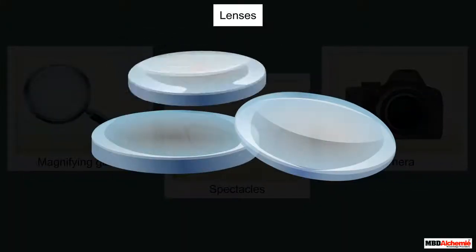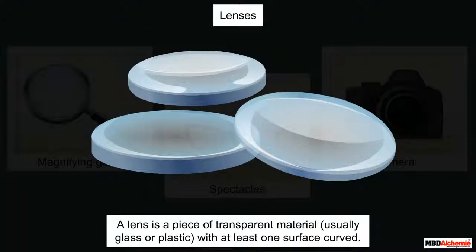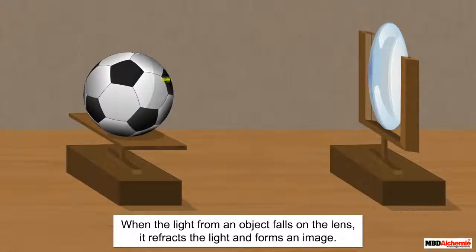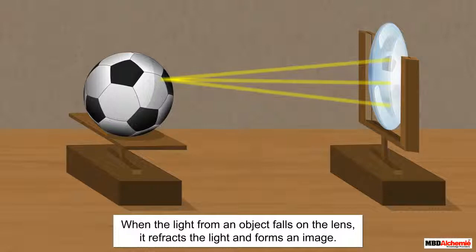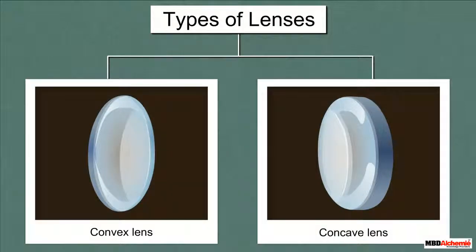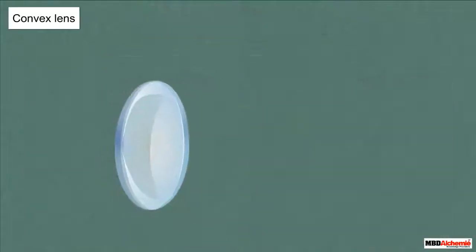It is the lens. A lens is a piece of transparent material, usually glass or plastic, with at least one surface curved. When the light from an object falls on the lens, it refracts the light and forms an image. Lenses are of two types: convex lens and concave lens.